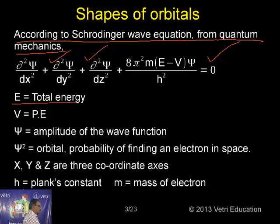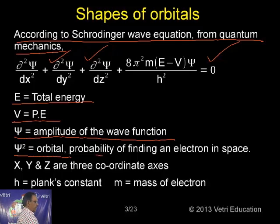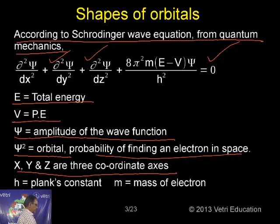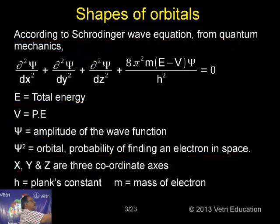In this equation: E is total energy, V is potential energy, ψ is the amplitude of the wave function, ψ² represents the orbital — the probability of finding an electron in space. X, Y, and Z are the three coordinate axes, h is Planck's constant, and m is the mass of the electron.